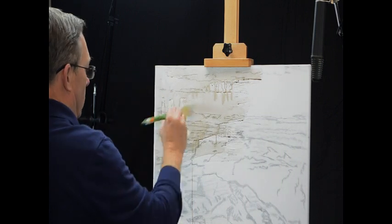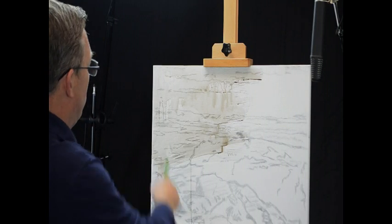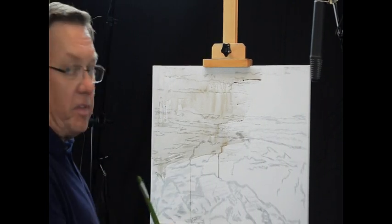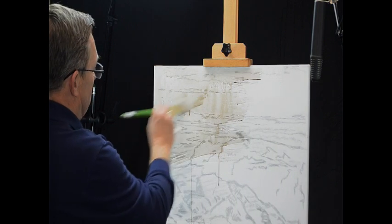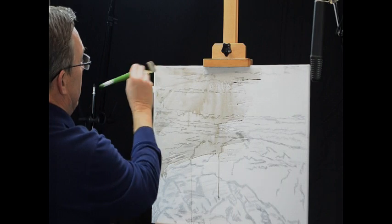Sometimes what happens is newly primed canvas resists the paint because this is so thin, so you just have to be diligent and go over it until you can see all the white is gone.